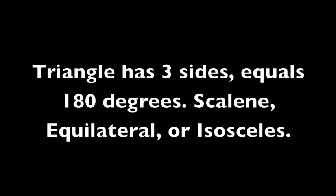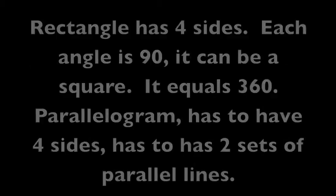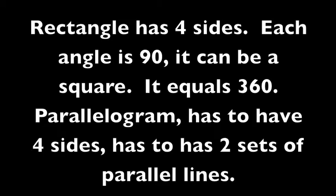Rectangle has four sides. Each angle is 90 degrees. It can be a square. It equals 360 degrees.